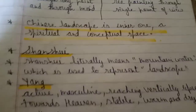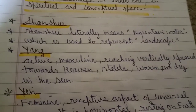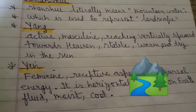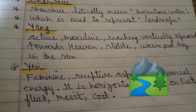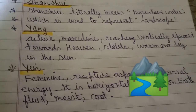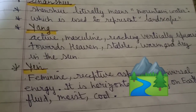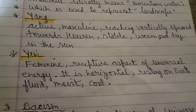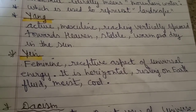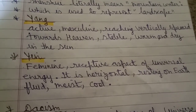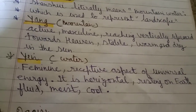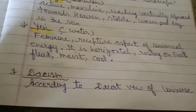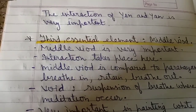In Chinese art, 'shanshui' — meaning mountain and water — represents the landscape. Mountain represents yang: the active, masculine aspect, standing vertically upward, stable, warm, and dry in the sun. Water represents yin: the feminine, receptive aspect of universal energy, which is horizontal, resting on the earth, flowing, and cool. According to the Daoist view of the universe, the interaction between yin and yang is very important.